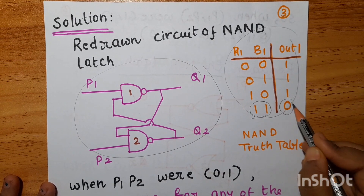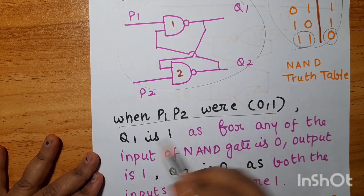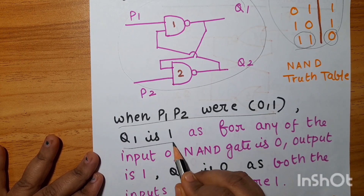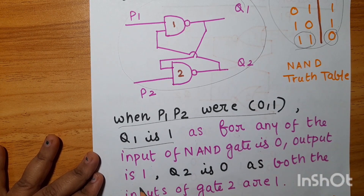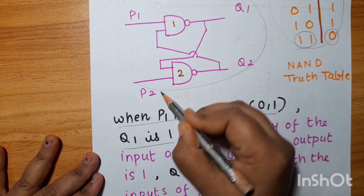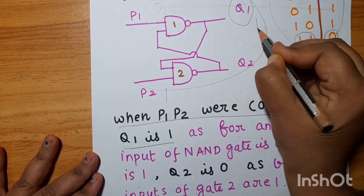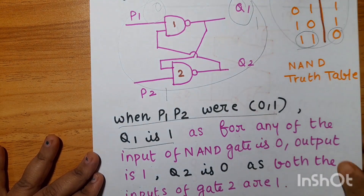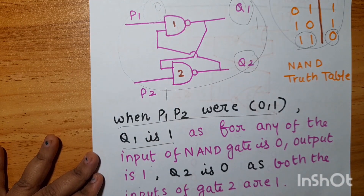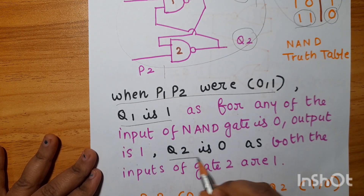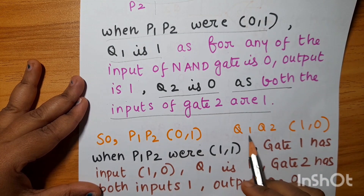When both inputs are 1, output is 0. Now when P1 and P2 are 0,1: since any input of the NAND gate being 0 gives output 1, with P1=0 and P2=1, Q1 is 1. Q2 is based on Q1 and P2; both inputs are 1, so Q2 is 0. So when P1,P2 is 0,1, Q1,Q2 is 1,0.